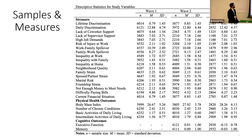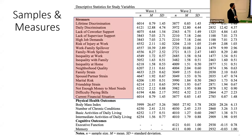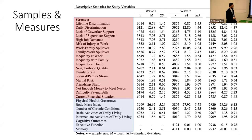We used data from the Study of Midlife Development in the United States, with three waves of data collection each spaced approximately a decade apart. We had the myriad psychosocial stressors as indicators of the hierarchical model, along with various physical and cognitive health outcomes: body mass index, number of chronic conditions, basic and intermediate activities of daily living, and a composite index of executive function and memory from the BTEC.